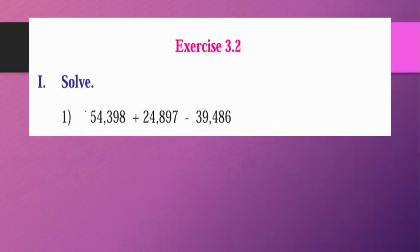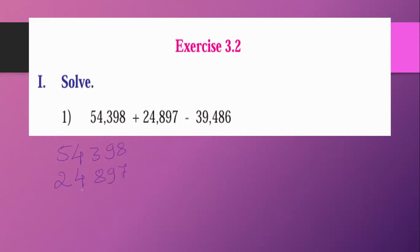Exercise, first one. Solve 54,398 plus 24,897. Add these 2. 8 plus 7 is 15, put 5 in unit place, carry 1 to 10 place. 9 plus 9 is 18, plus 1 is 19, carry 1. 3 plus 8 is 11, plus 1 is 12, put 2, carry 1. 4 plus 4 is 8, plus 1 is 9. 5 plus 2 is 7. The answer is 79,295.